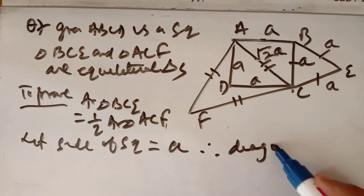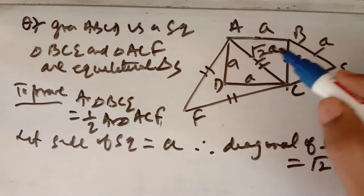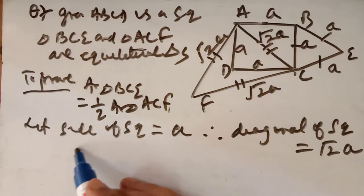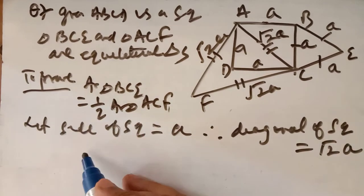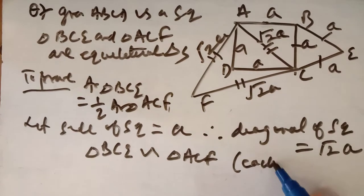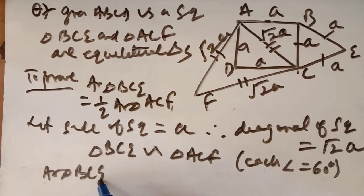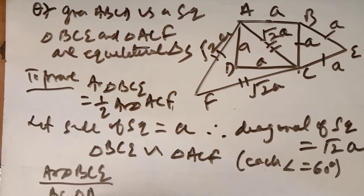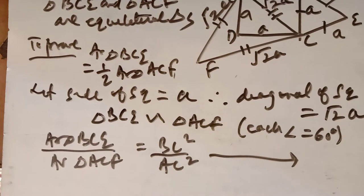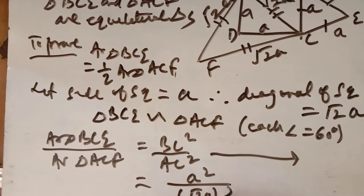The side of equilateral triangle BCE, described on the side, is also equal to A. The diagonal of the square is √2·A. Triangle BCE is similar to triangle ACF because each angle equals 60 degrees — two equilateral triangles are always similar. The ratio of their areas is equal to the ratio of squares of their corresponding sides: area BCE / area ACF = BC² / AC² = A² / (√2·A)² = 1/2.